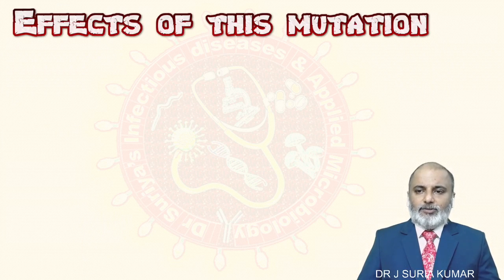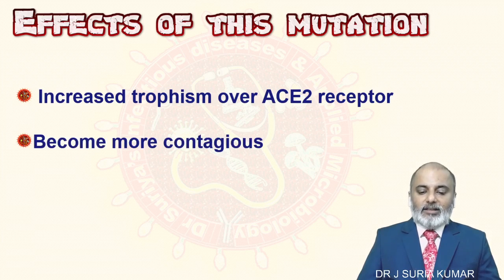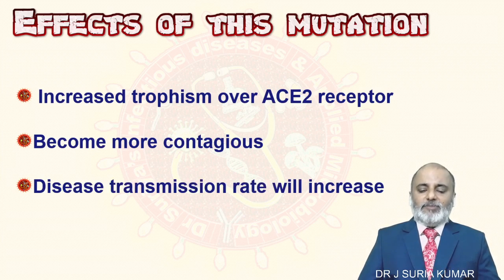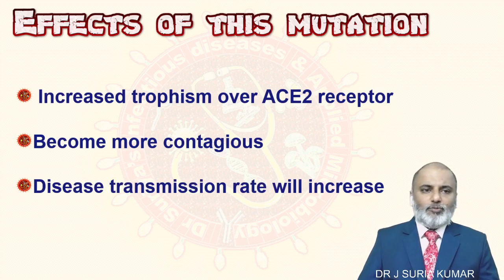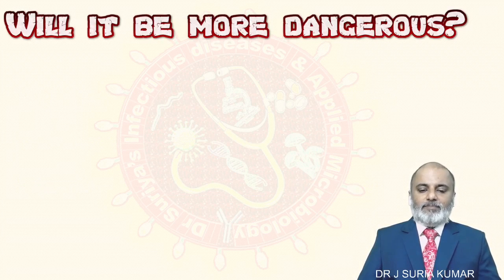Effect one: where there is a change in the spike protein, there is increased tropism over the ACE2 receptor — meaning more attachment, more tropism — which makes the virus more contagious. The number of infectious cases will increase, so the transmission rate will be increased. The virus wants more hosts, so it changes according to the host ACE2 receptor.